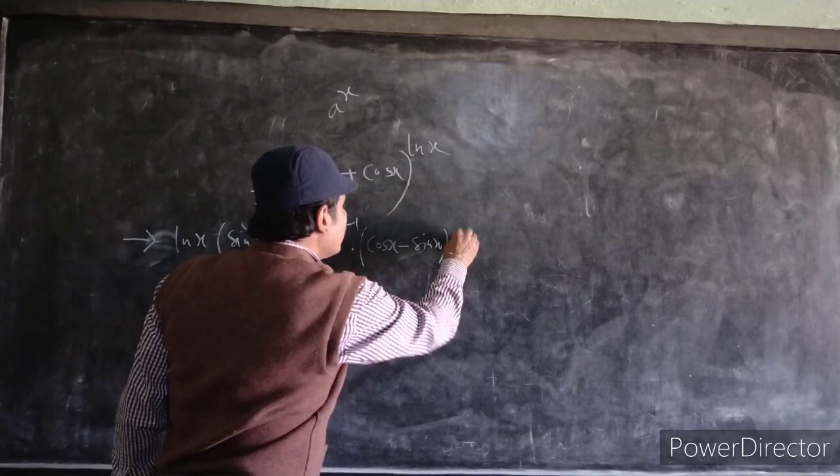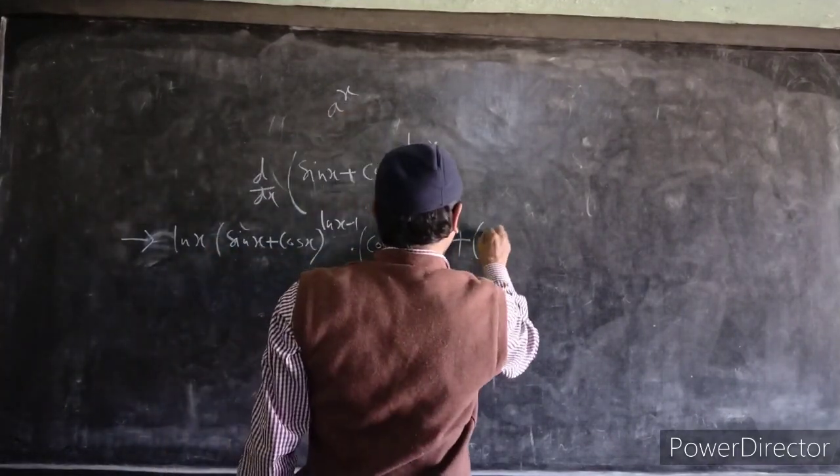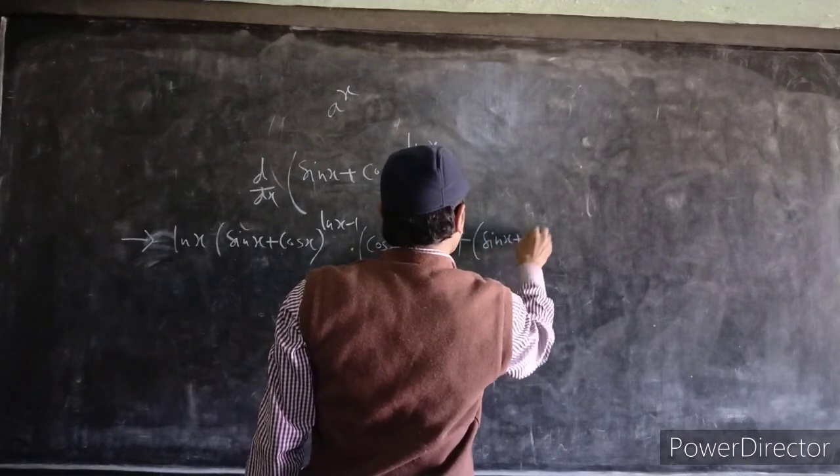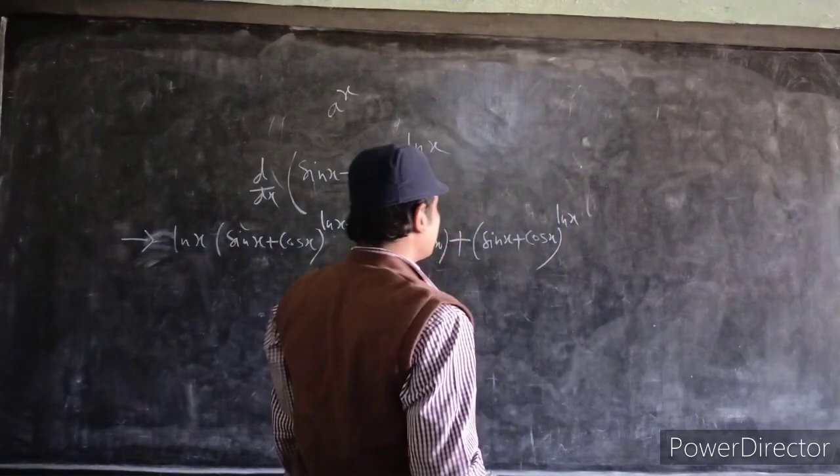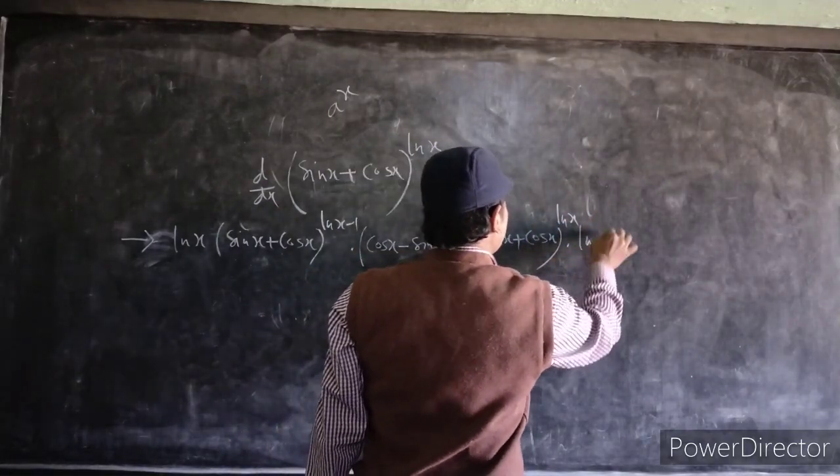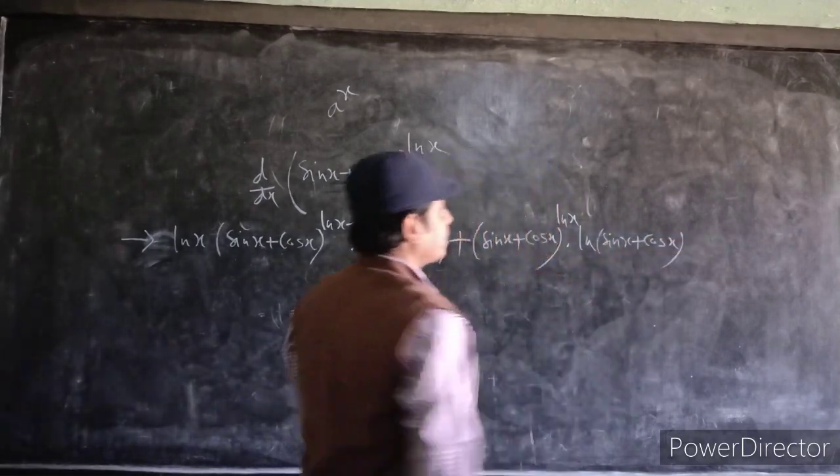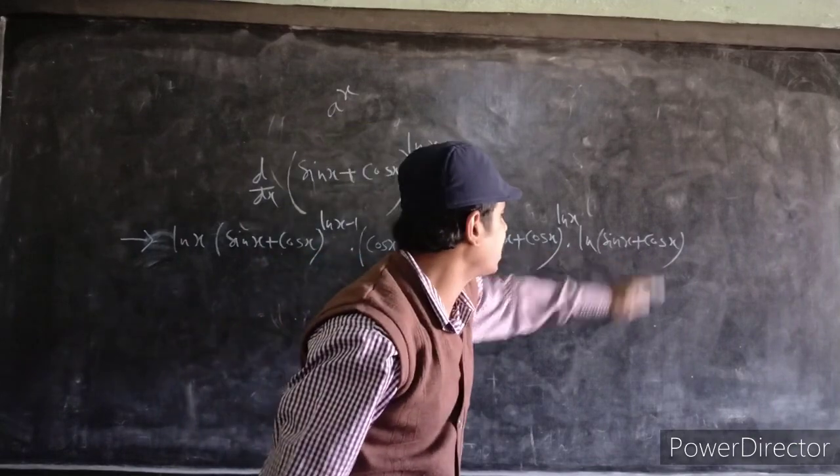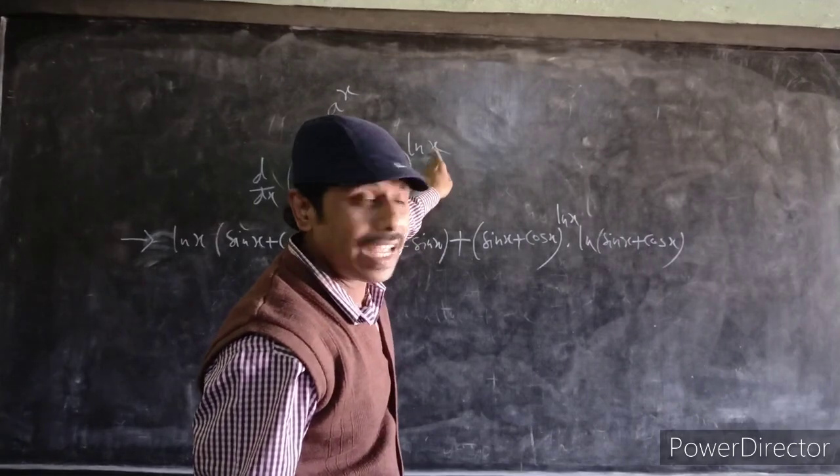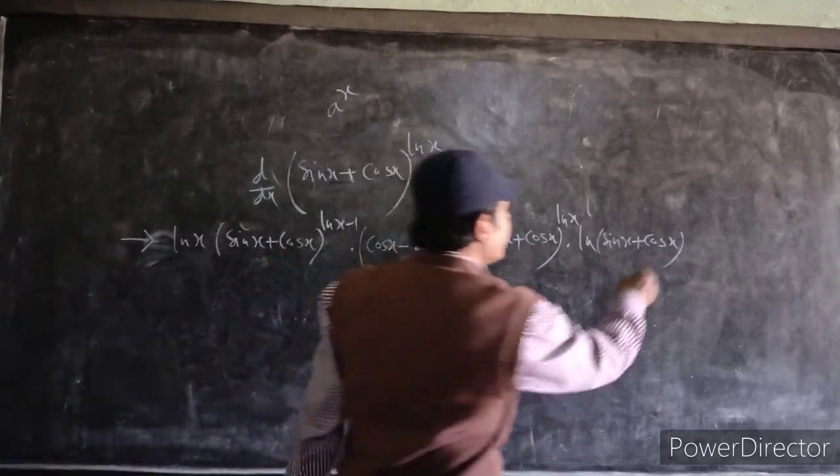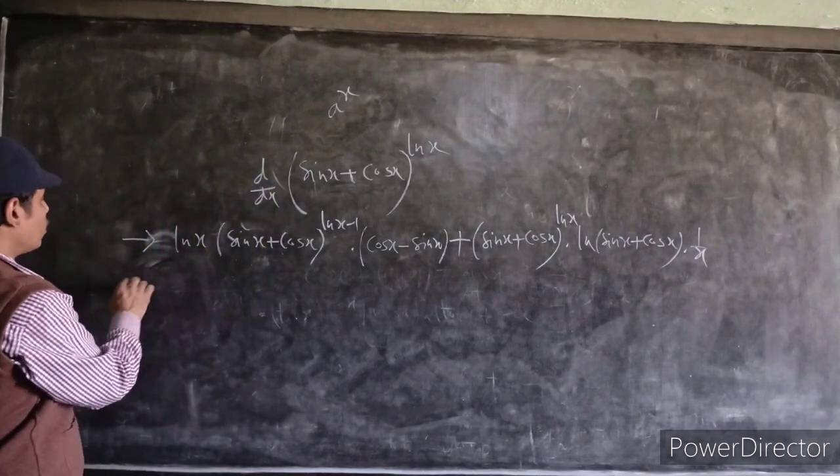The e to the power x, the difference between e to the power x into log, it means sin x plus x to the power of x into log of sin x plus x plus x. We will use x to the power x. It will be x to the power x. Now we will use the simplification.